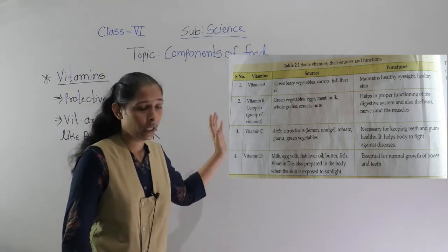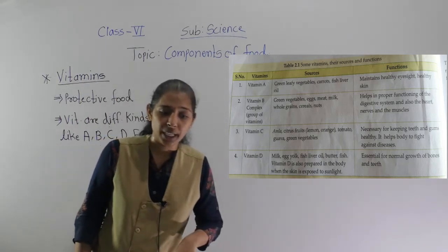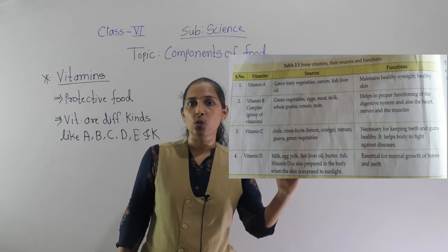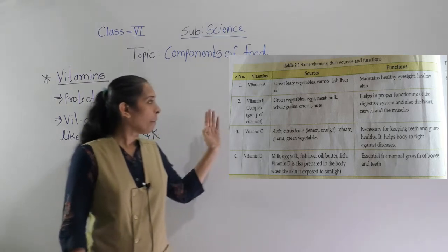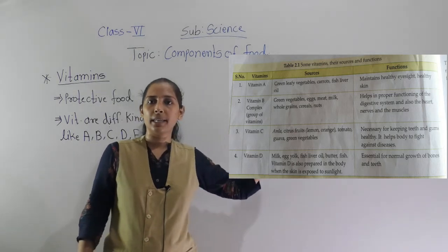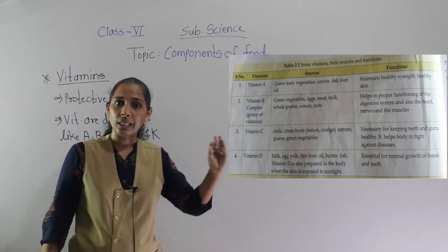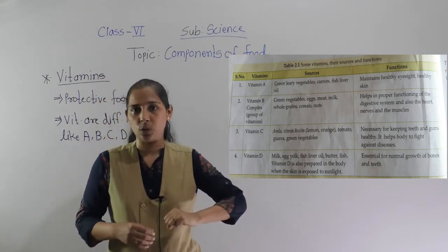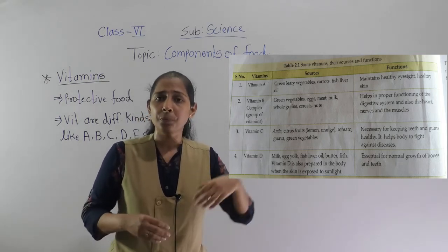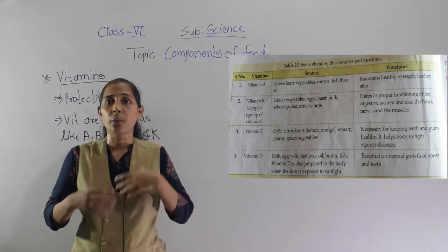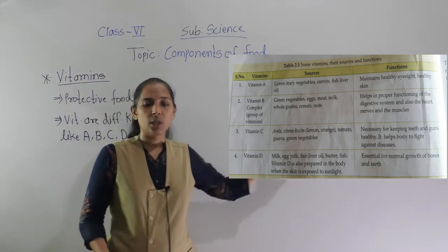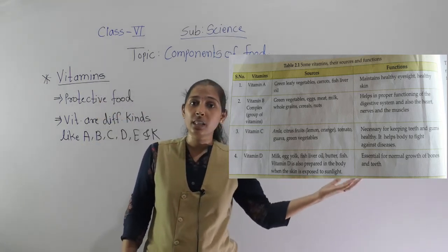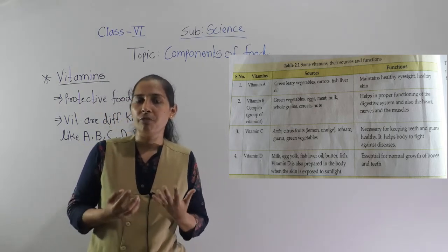The next vitamin is vitamin D. The sources of vitamin D are milk, egg yolk, fish liver oil, butter, and fish. Very importantly, vitamin D is the only vitamin we can get from an external source — if we sit in early morning sunlight, it helps our body prepare vitamin D. Vitamin D is also produced in the body when the skin is exposed to sunlight.